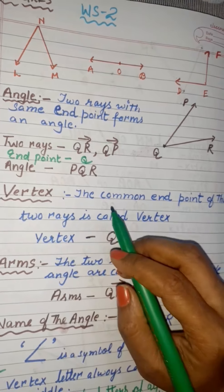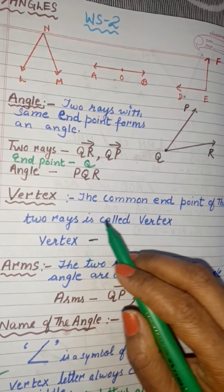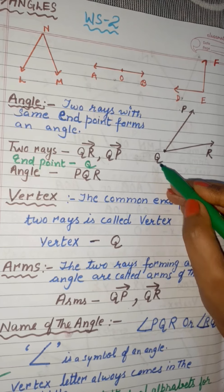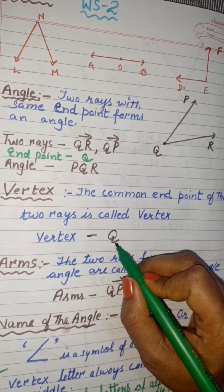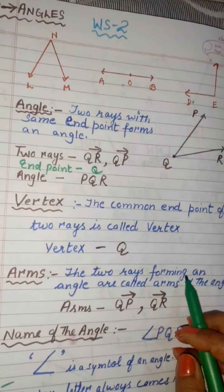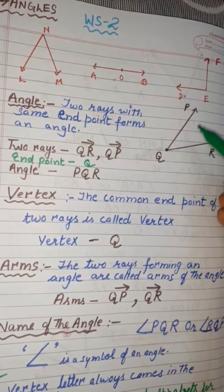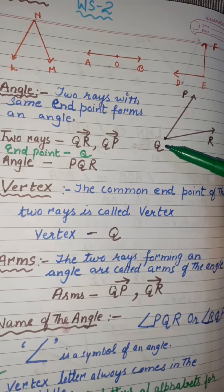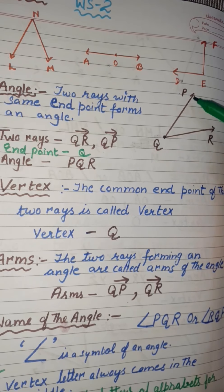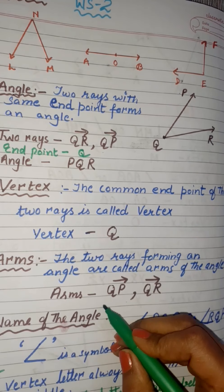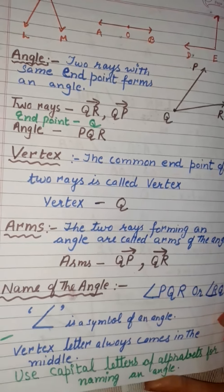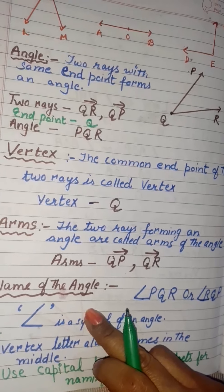Now we will learn about the vertex. The common end point of the two rays is called the vertex. Here the common end point is Q, so the vertex is Q. The two rays forming an angle are called the arms of the angle. In this example the two rays QP and QR are the arms of the angle.